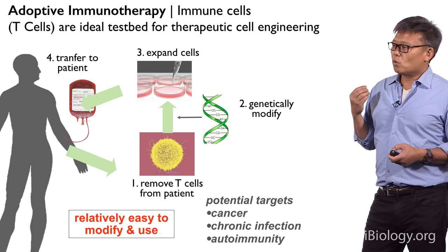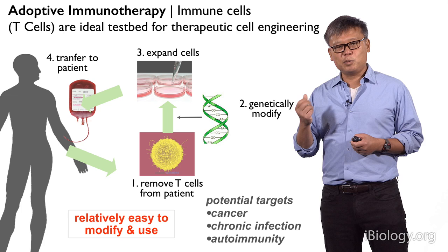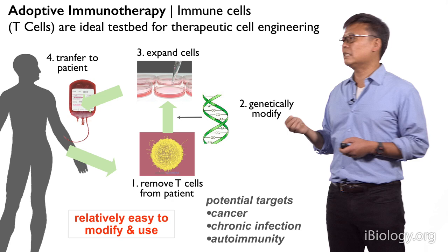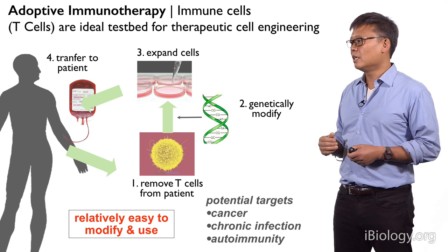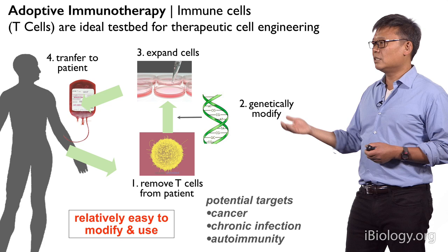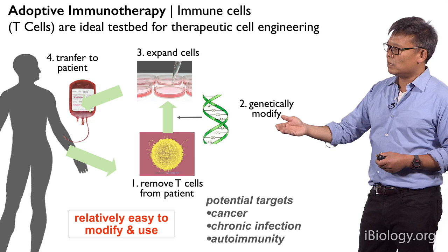One of the great testbeds to really explore this today is in the area of adoptive immunotherapy. Immune cells — particularly a type known as T lymphocytes or T cells — are an ideal testbed for this kind of therapeutic engineering. These are cells that are able to recognize and kill a cell that's infected by a virus — so they have very powerful activities. More importantly, we know that we can actually remove T cells from a patient, genetically modify them ex vivo, expand them ex vivo, and then transfer them back into the patient.